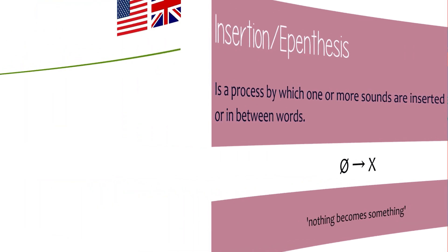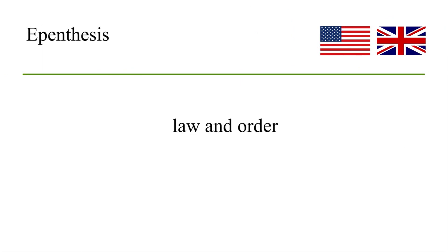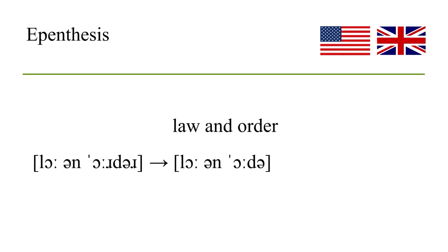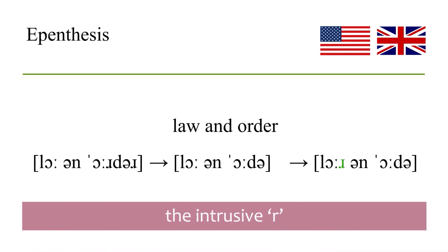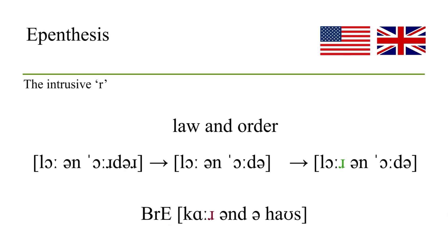Let me give you some examples. 'Law and order.' In British English it should be 'law and order,' but if you listen to British English speakers you would hear an R here which doesn't exist — there's no R, even in North American English. This is called intrusive R. Maybe it's because of analogy, like 'car and a house.' British English speakers actually insert an R and say 'law-r-and order.'